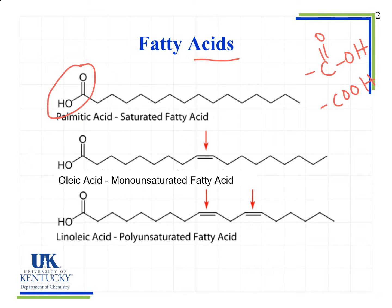Let's look at an example of an unsaturated — in this case, a monounsaturated fatty acid — because it has one double bond. Saturated means it has the maximum number of hydrogen atoms, so we only have carbon-carbon single bonds. An unsaturated fatty acid has one or more double bonds (typically double bonds). A monounsaturated fatty acid has one double bond, while a polyunsaturated fatty acid has more than one double bond — multiple alkene groups.